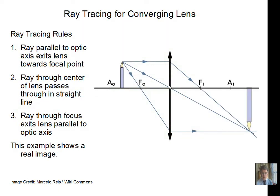Rules for ray tracing with a converging lens, using the thin lens simplification. There are three rules to memorize. Rule one: a ray parallel to the optic axis hits the lens at the center line, then you draw a line through the focal point and continue it. Rule two: a ray that heads through the center of the lens has no refraction — it goes straight through. Rule three: if a ray passes through the focal point before arriving at the lens, the light leaves parallel to the optic axis. The rays cross and locate the image on the right side — a real image with actual concentration of energy.